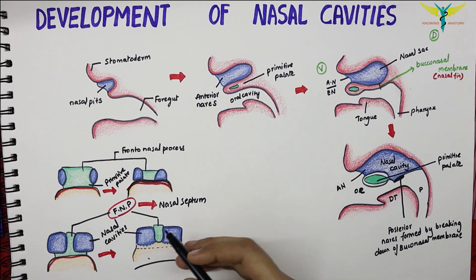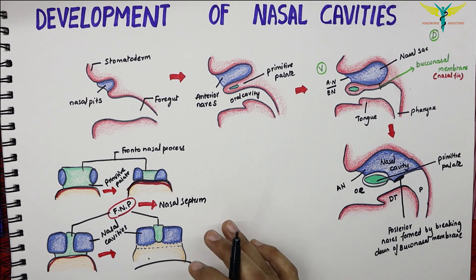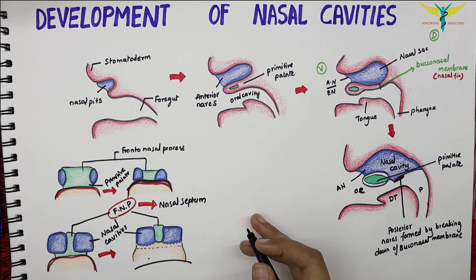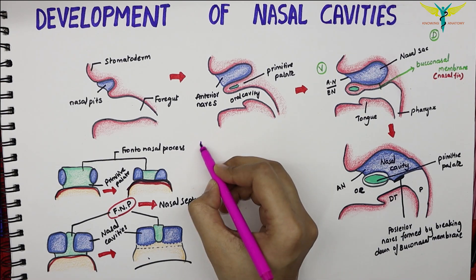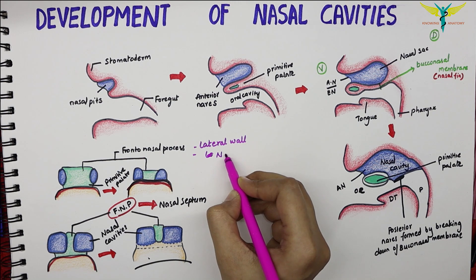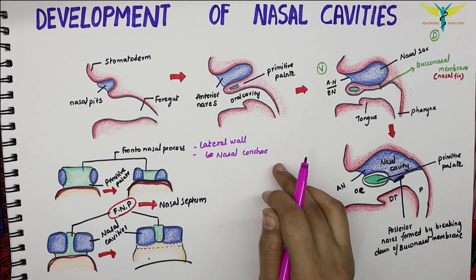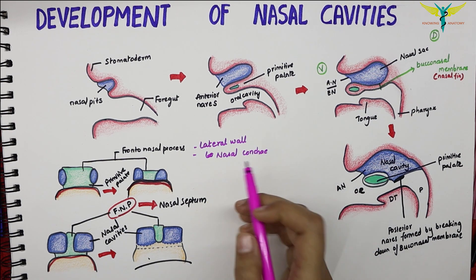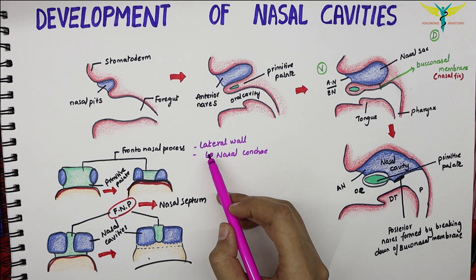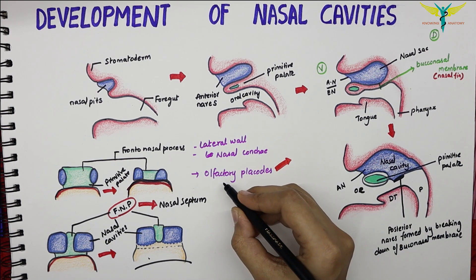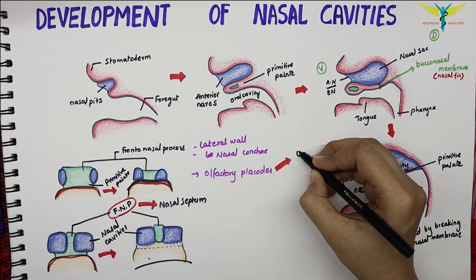The lateral wall of the nose is derived on each side from the lateral nasal processes. The nasal conchae appear as elevations on the lateral wall of each nasal cavity. The olfactory placodes form the olfactory epithelium, which forms the roof of the nasal cavities.